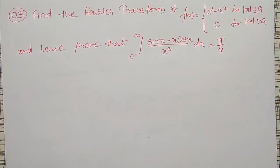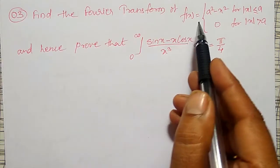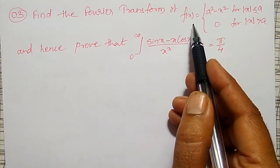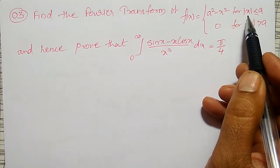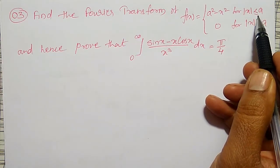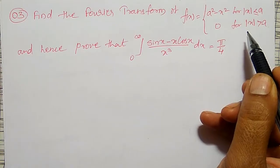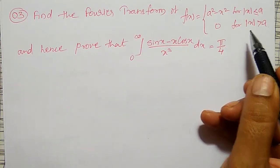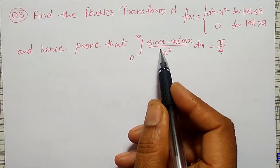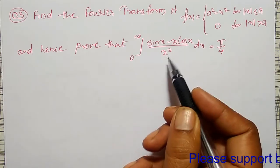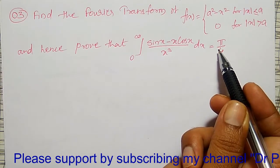One more example on Fourier transform we are going to discuss. Find the Fourier transform of f(x), where f(x) is defined as a² minus x² for modulus of x less than or equal to a, and 0 for modulus of x greater than a. Hence, prove that the integration from 0 to infinity of (sin x minus x cos x) divided by x³ dx equals π/4.